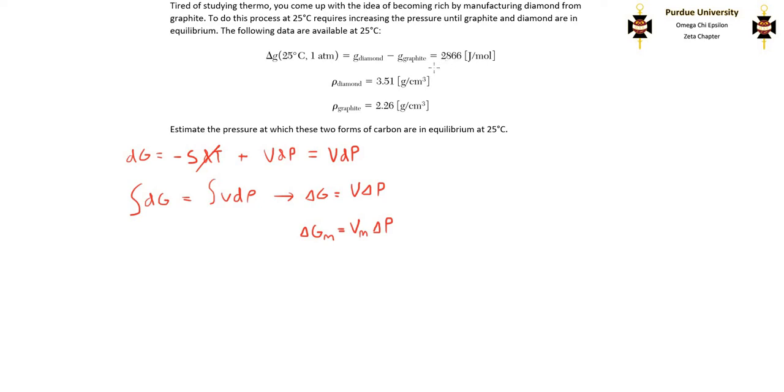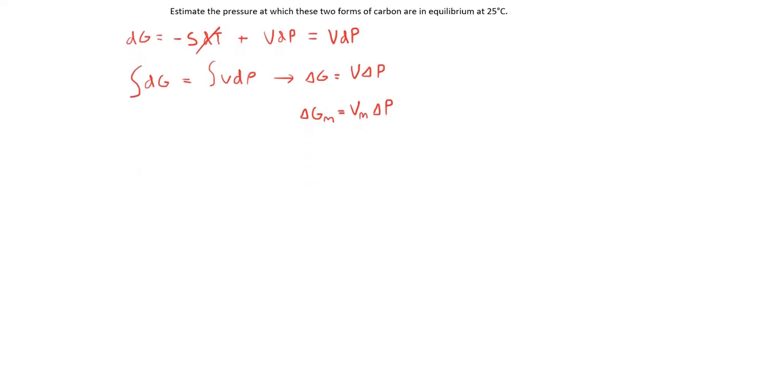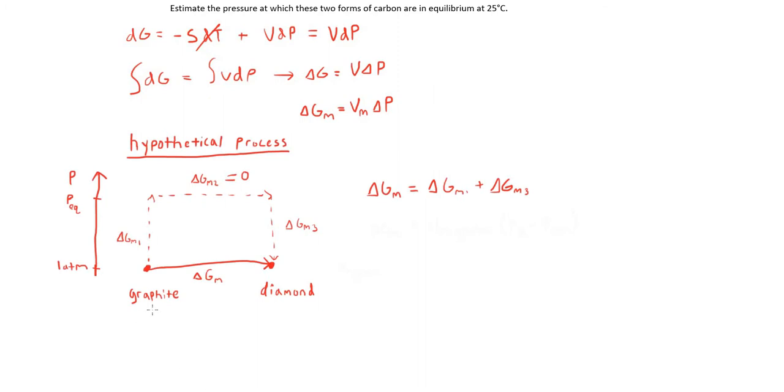I'm now going to draw up a diagram of our hypothetical process. This process of changing graphite to diamond has a certain change in molar Gibbs free energy, ΔG_m. But it's also equal to the hypothetical process where we increase the pressure of pure graphite to its equilibrium pressure with diamond, then change from graphite to diamond at the equilibrium pressure, and then decrease the pressure back to 1 atm when we have pure diamond.